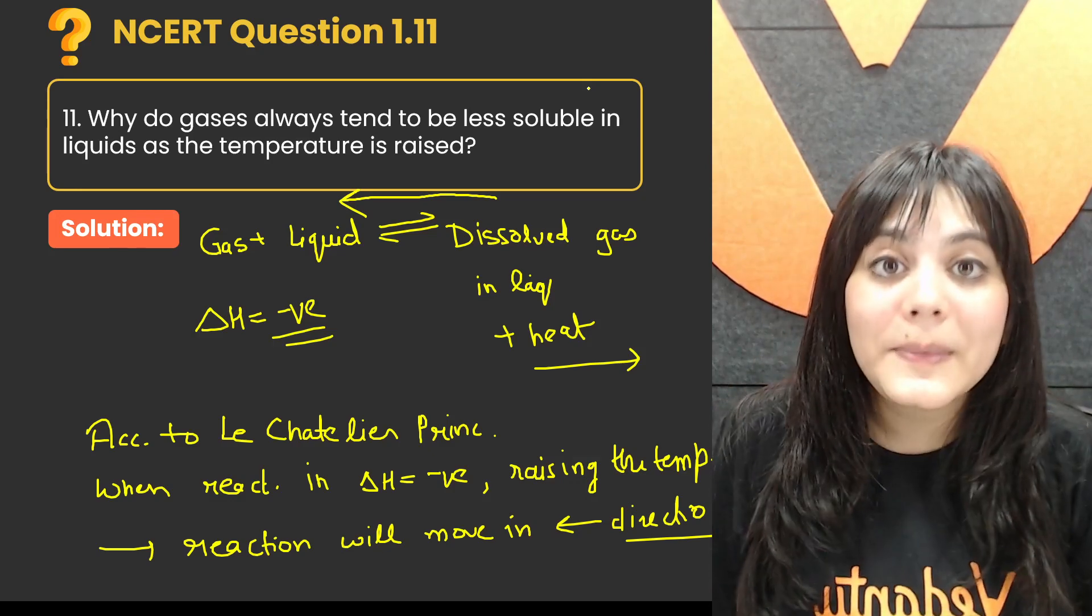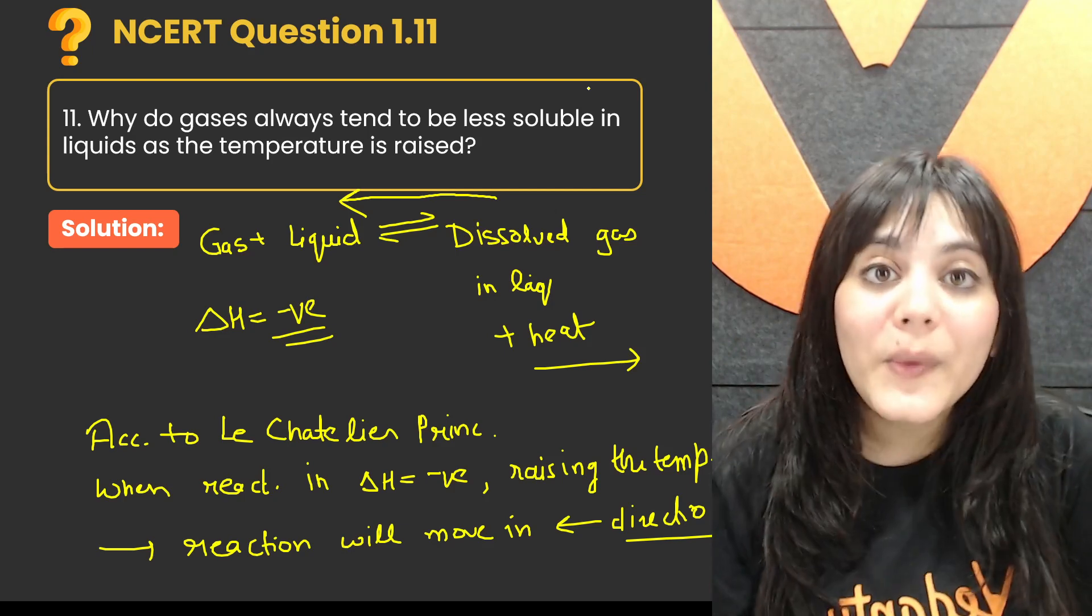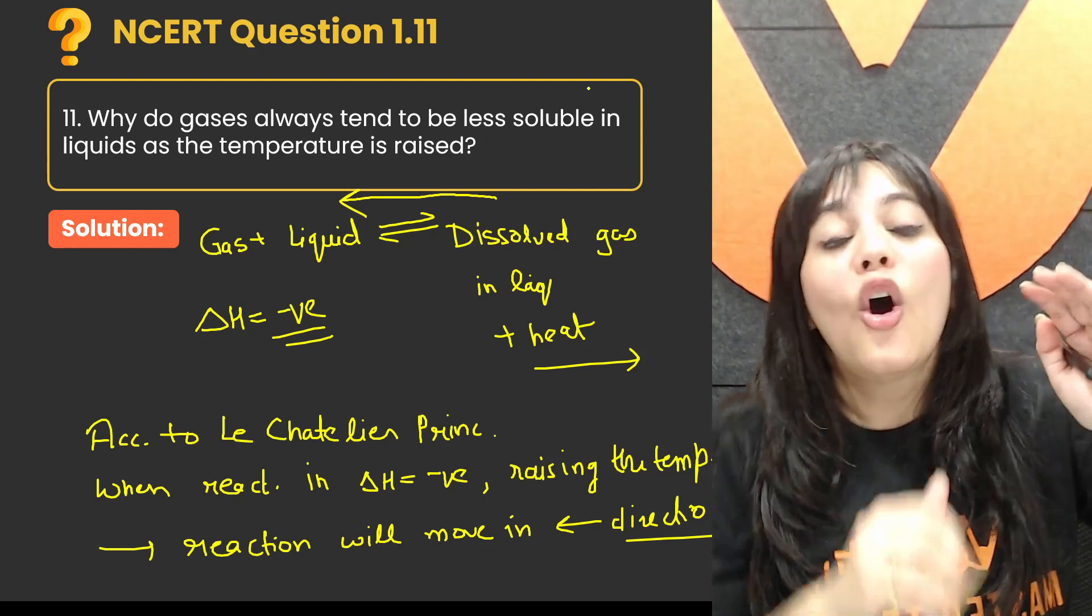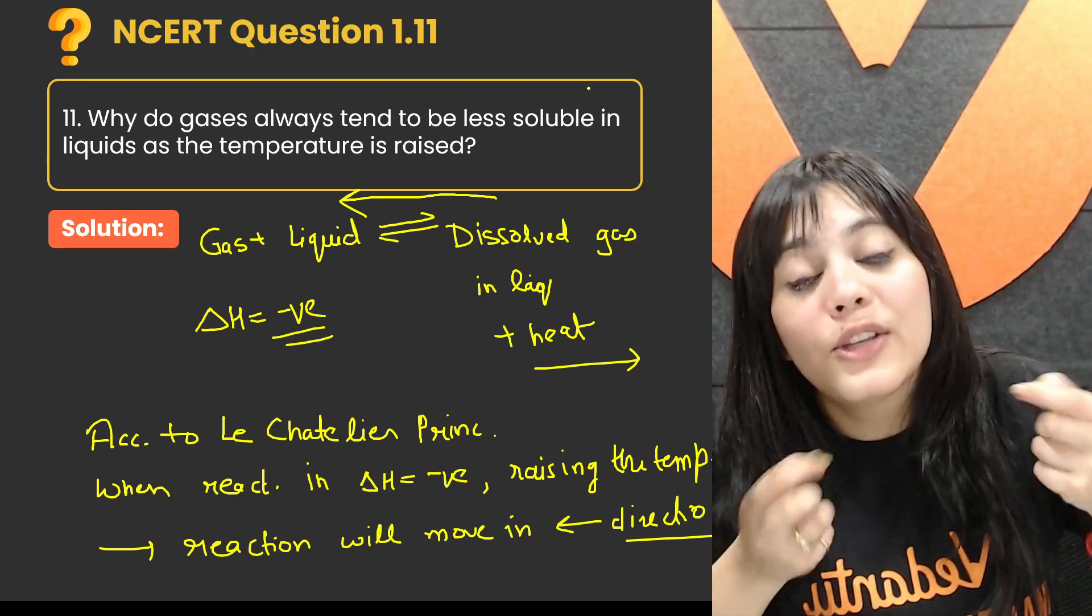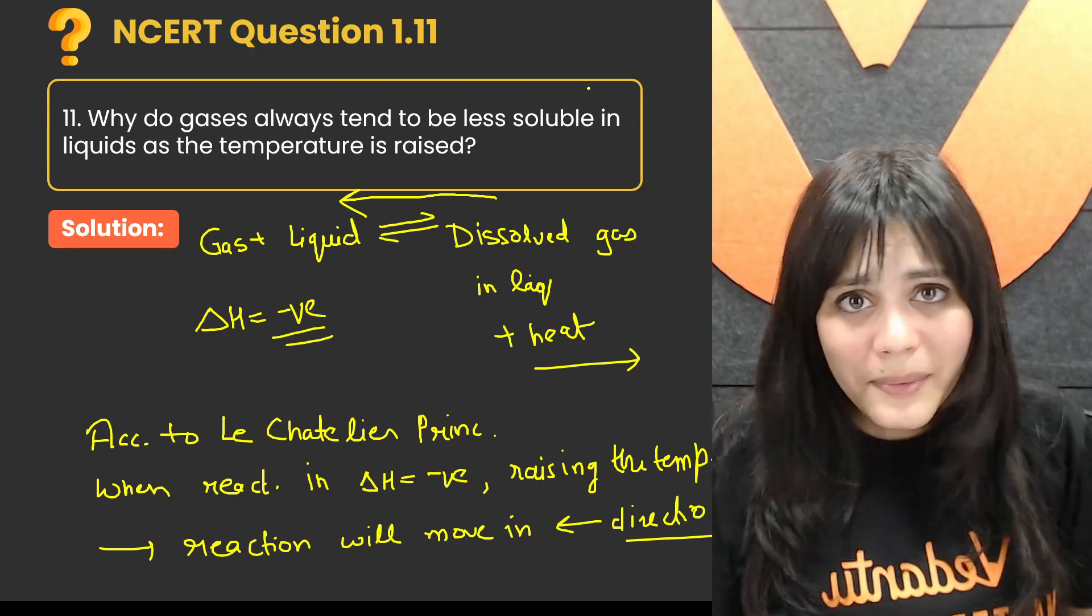Because this reaction is exothermic, and according to Le Chatelier's principle, the reaction will go in the backward direction. That means gas and liquid separate, so the gas is less soluble.